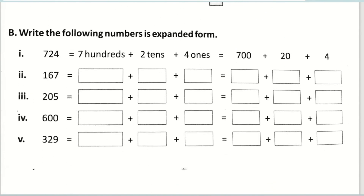The next one is: write the following numbers in expanded form. The first one is done for you; we'll go for the next one. How many hundreds? One hundred. How many tens? Six tens — I hope you are doing this with me. And how many ones? Seven ones. So it is one hundred plus sixty plus seven.